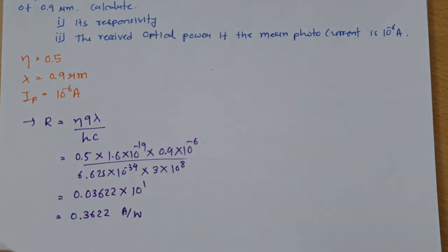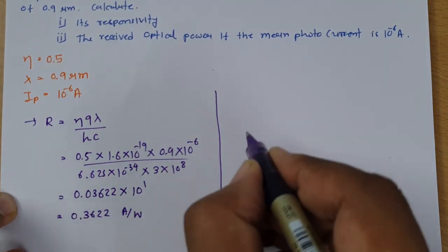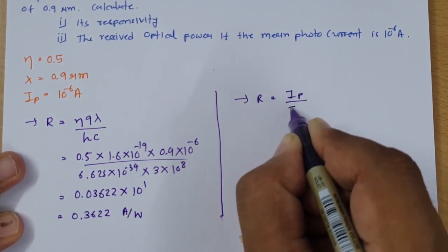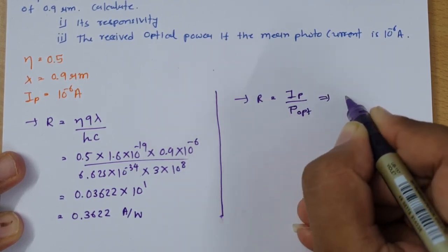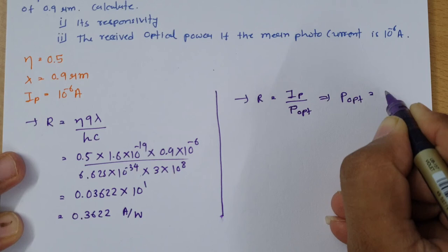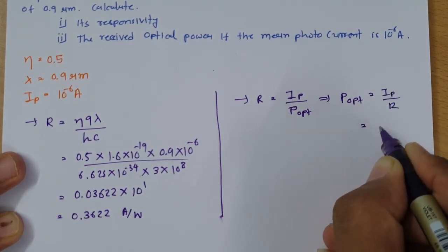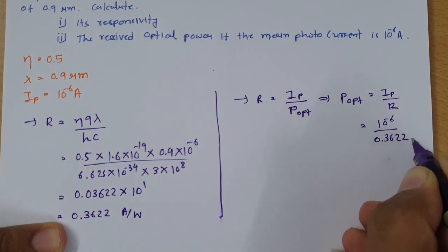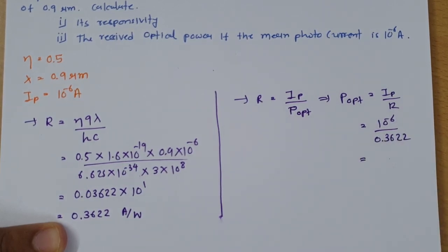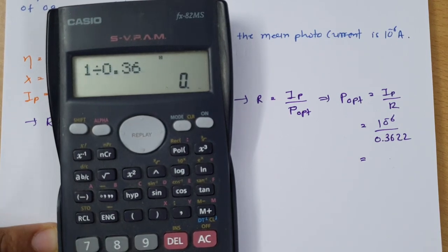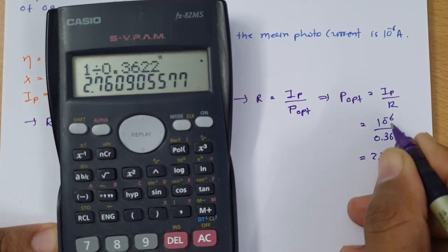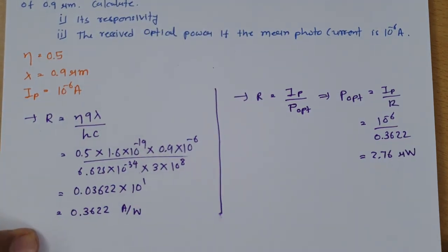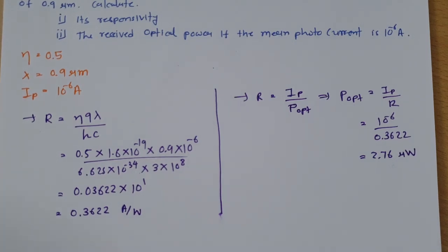Now, based on responsivity, optical power = photocurrent / responsivity. Photocurrent is 10⁻⁶ amperes and responsivity is 0.3622, so optical power = 1 / 0.3622 = 2.76 × 10⁻⁶ watts, which is 2.76 microwatts.